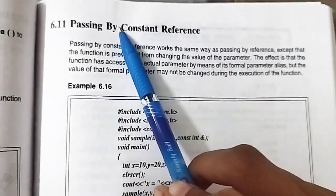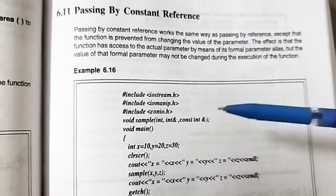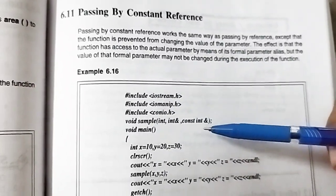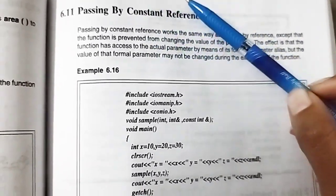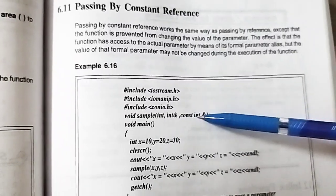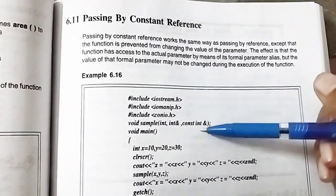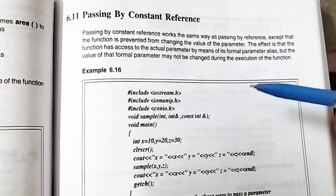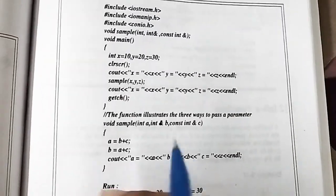Now coming to the concept of passing by constant reference. When we pass a formal argument by reference, we can make it a constant reference using the keyword 'const'. This means the value cannot be changed during function execution. We have the reference but we cannot use it to change the value inside the function, and if we try, the compiler will give an error.